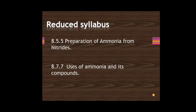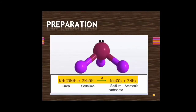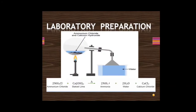These topics have been reduced for the year 2020-2021 from your syllabus. One of the methods of preparation of ammonia is from urea using soda lime. The reaction gives sodium carbonate and ammonia gas is also generated, so from urea we can get ammonia gas.